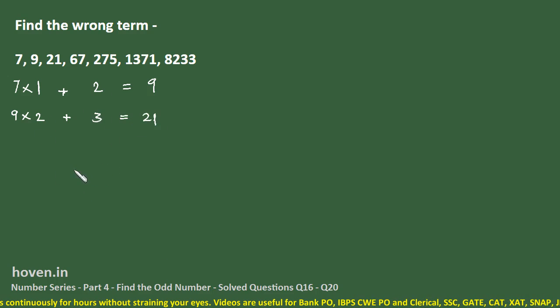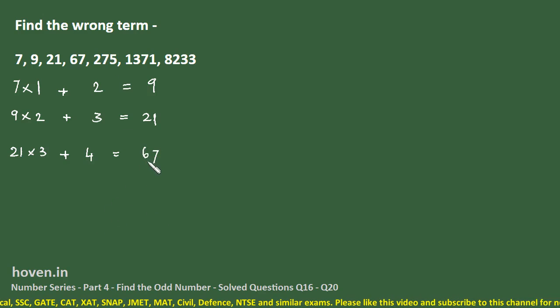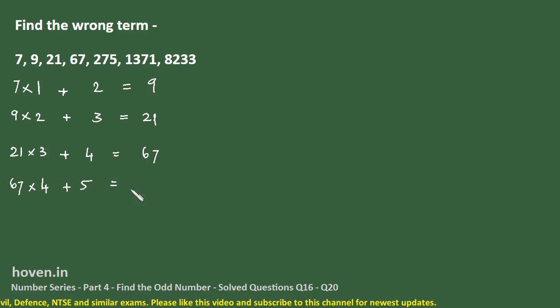So 1, 2, 2, 3 - some sequence is there. Here take 21, 21 into 3 plus, if I am right it should be 4 here. It is 63 plus 4, 67. So most probably we have cracked the series. Let us go from 67, 67 into 4 plus 5 gives us 273.